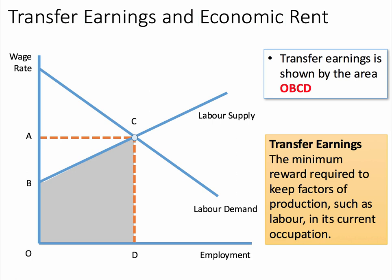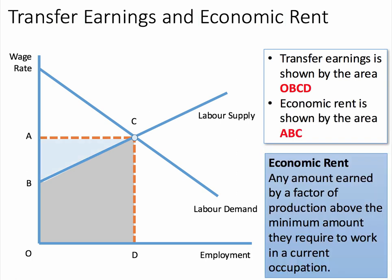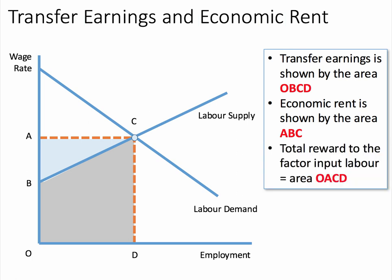Of course, the total earnings of labour equal the wage multiplied by employment, so the other area must be economic rent. Economic rent is the amount earned by a factor of production above the minimum amount they need to work in a current occupation. The area of economic rent is always shown by the area below the wage and above the labour supply curve — in this case, the light blue shaded area A, B, C. The total reward to the factor input labour is the sum of transfer earnings and economic rent.